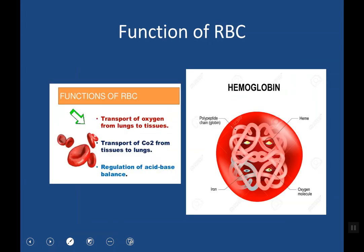The main function of the RBC is to transport oxygen from the lungs to the tissue, and transport carbon dioxide from the tissue to the lung. They also help in the acid-base balance.